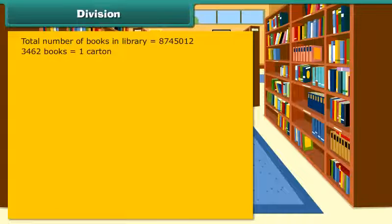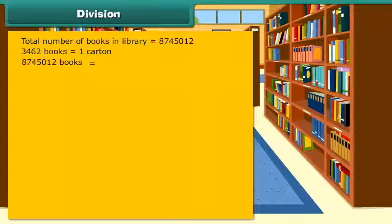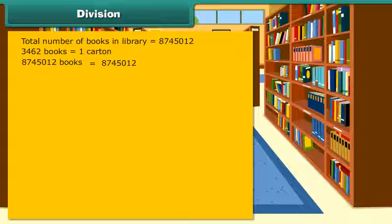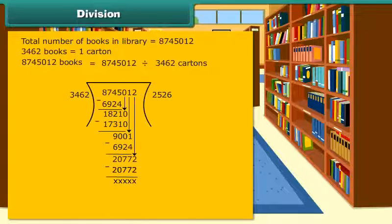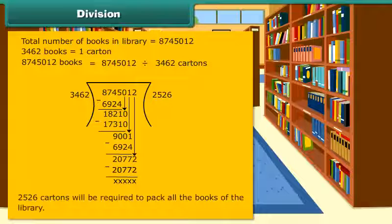3462 books equals 1 carton. 8745012 books equals 8745012 divided by 3462 cartons. Therefore, 2526 cartons will be required to pack all the books of the library.